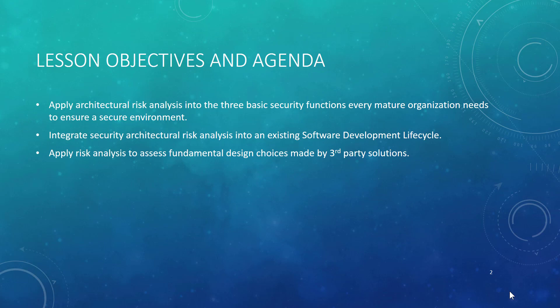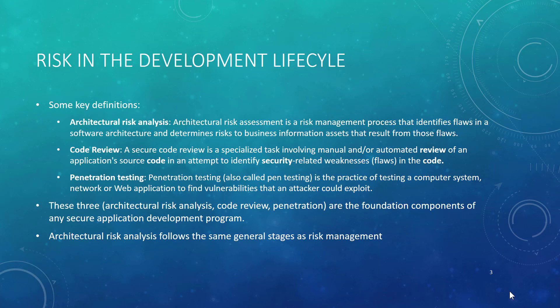Architectural risk analysis is a risk management process that identifies flaws in the software architecture and determines risk to business information assets that result from those flaws. Notice we're using the word flaw instead of vulnerability, but candidly we could use both — they're flaws, they're weaknesses in that architecture.